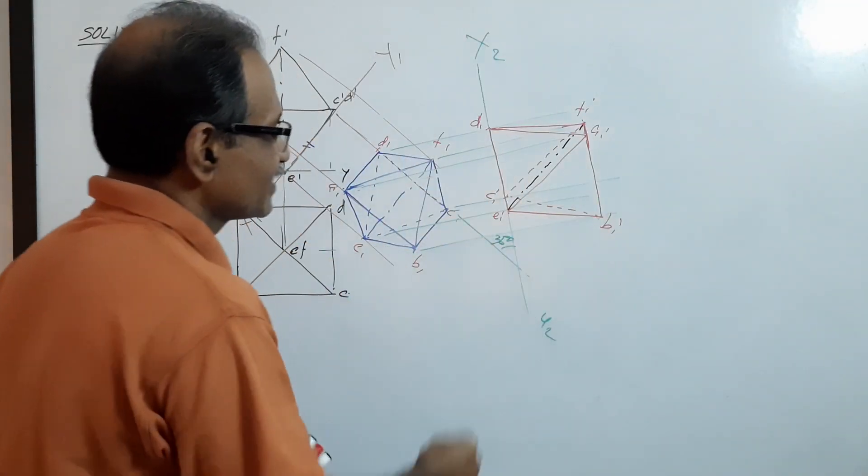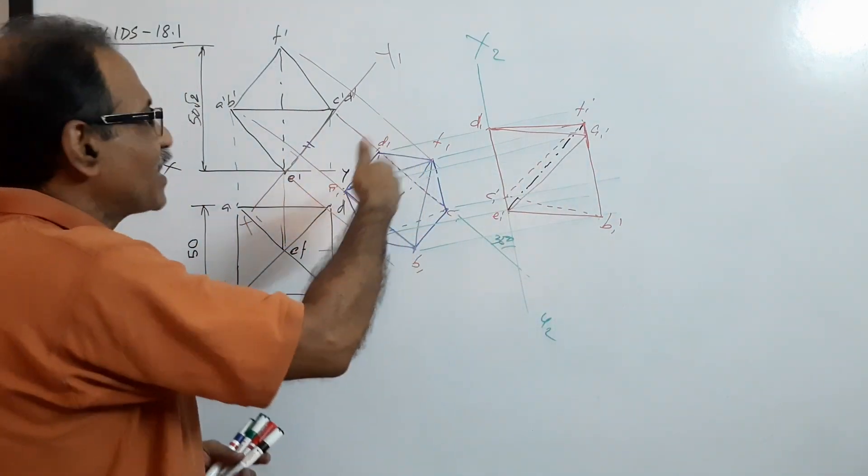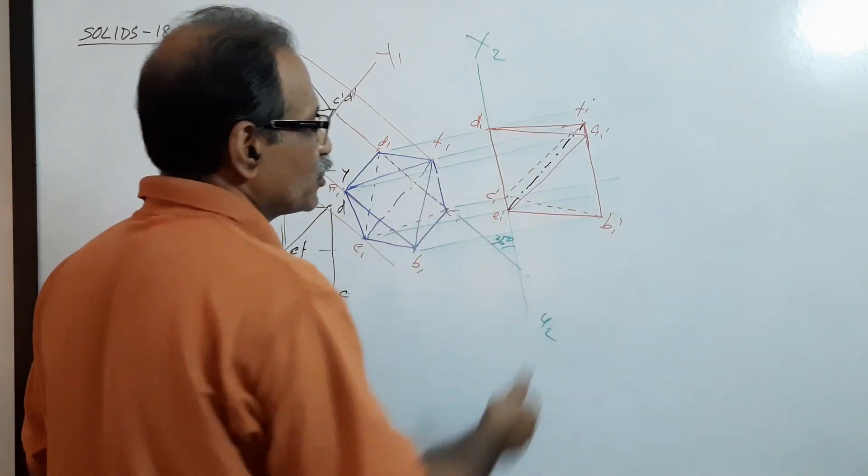This is the E-F axis which you have taken initially. There are three axes, but initially I marked E-F as an axis, so E-F I have reproduced there.